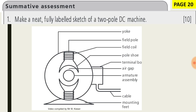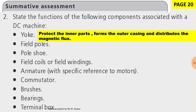Let's have a look at a few questions from the exercise in the textbook. Question one asks us to make a neat, fully labeled sketch of a two-pole DC machine — two poles meaning there is only one pair. We would have to name all the main components. The yoke protects the inner parts, forms the outer casing, and distributes the magnetic flux.